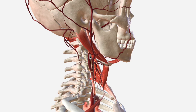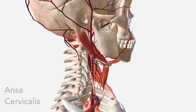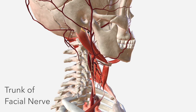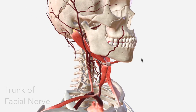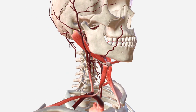In terms of structures of the nervous system, we have the ansa cervicalis, a close neighbor to the bifurcation of the common carotid. We have the trunk of the facial nerve here as well. Lastly, we have the parotid gland, from where all this really began.